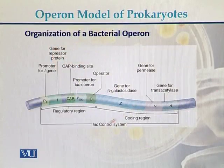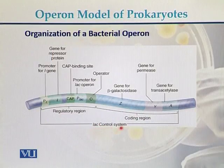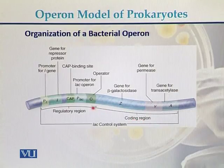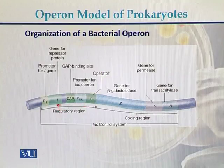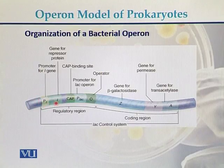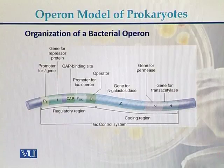In this diagram we can see the lac control system, or bacterial operon. These are the structural genes, also called the coding region. Here is the operator region, then the genes for the repressor protein, and the promoter for the I gene, which produces a regulatory protein that controls the expression of the genes either by inducing or by repressing.